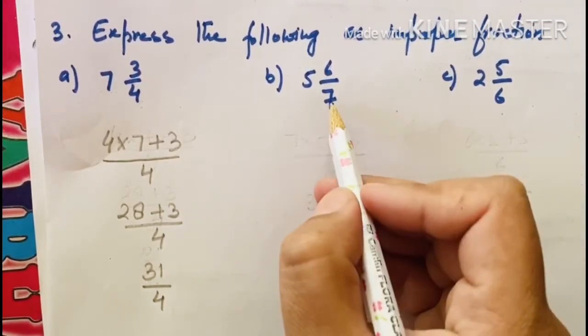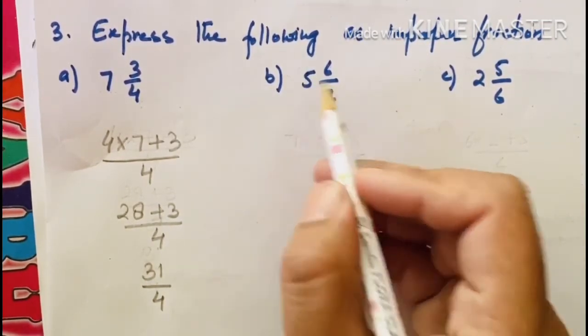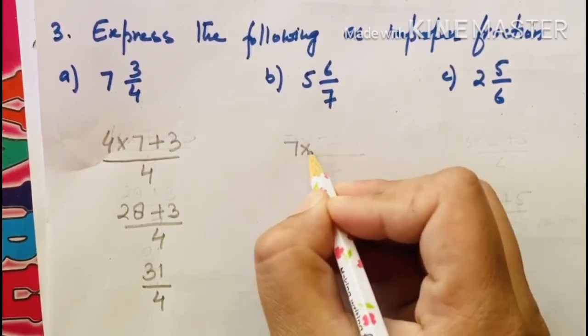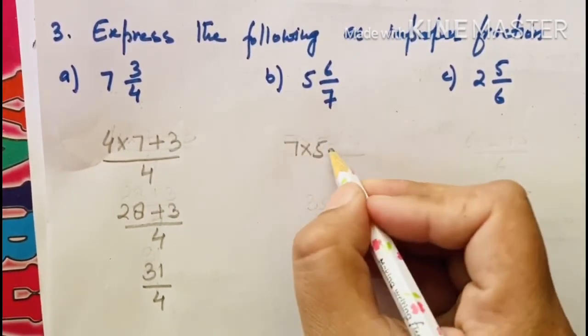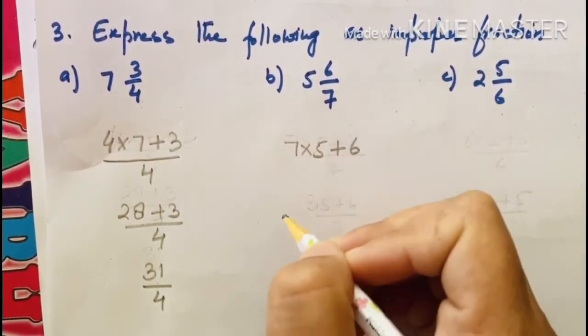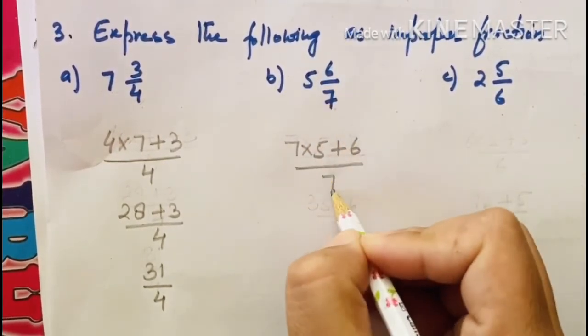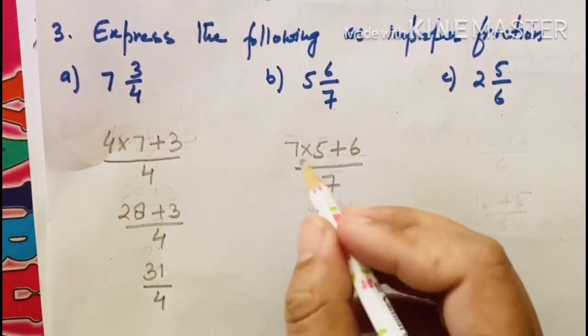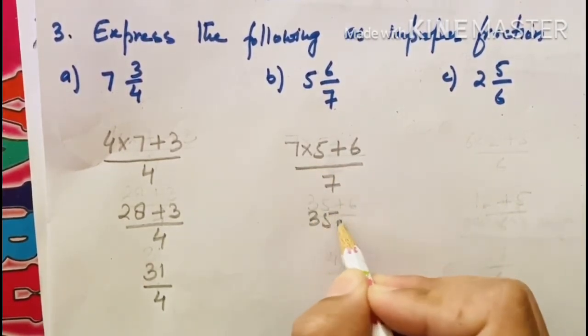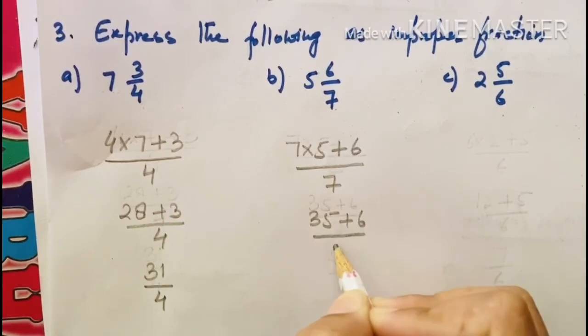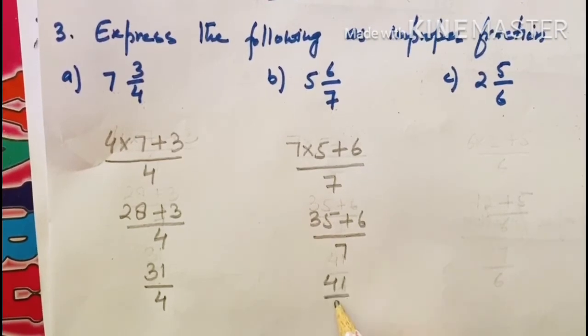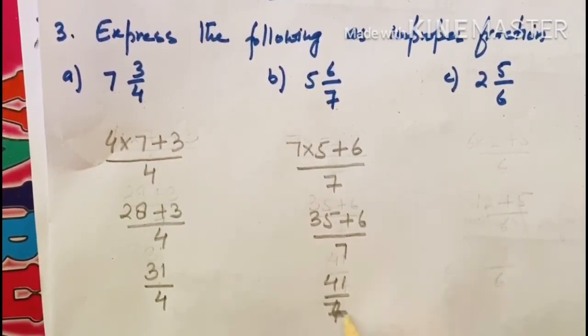Next, check it out. You have to multiply 7 by 5. 7 ko multiply karna hai 5 ki saath, then add 6. Add karna hai 6. Upon denominator mein 7 hai to 7 in denominator. 7, 5 za 35 plus 6 upon 7. Plus karo 30, 40, 41 upon 7. This is your answer.